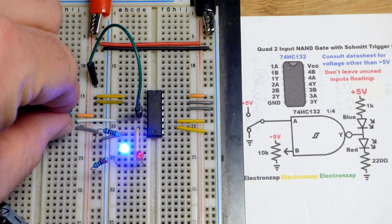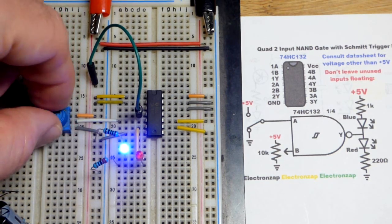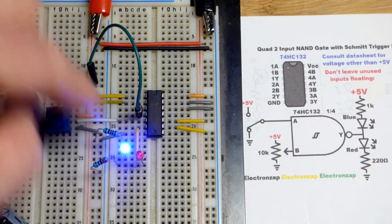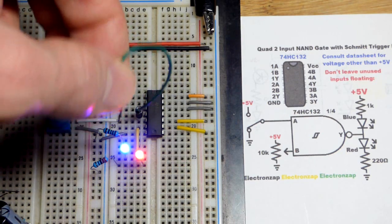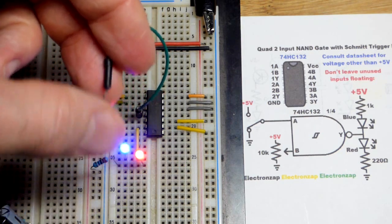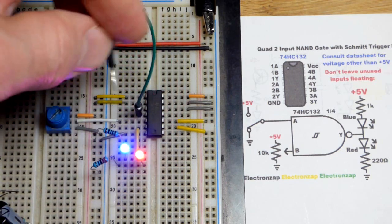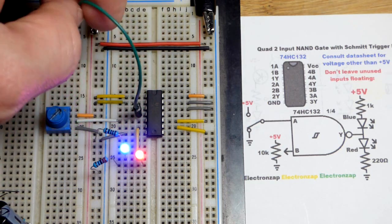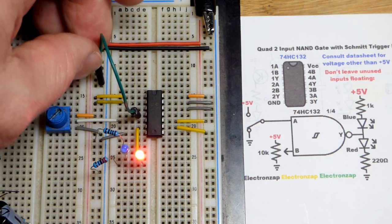The only way that we can get a low output is to have two high inputs. And we can pop this out. This is actually floating in the air right now. So the Schmidt trigger effect doesn't protect you against this. So you may want a pull-up or pull-down resistor to lock that output in place.